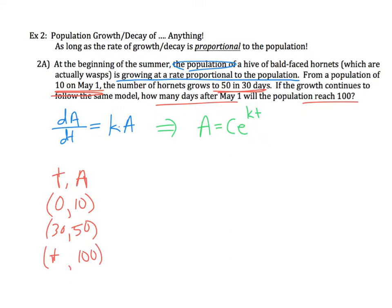So in 30 days I have 50 of these hornets, and then the question is asking how many days after May 1st will the population reach 100. Essentially my task is to solve for t. Normally that's a simple task—you put in your y value and look for an x value. It's going to take us a little while because we have two unknowns right now: this constant C and this constant K. I'm going to use my given information to solve for that.